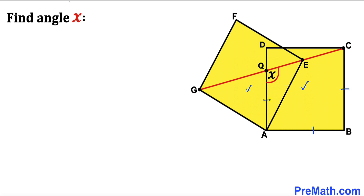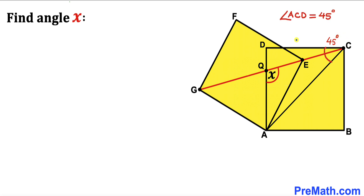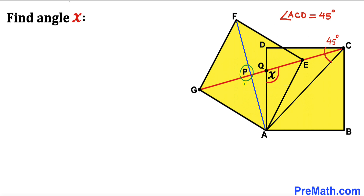Now let's focus on the given problem. Since both squares are identical, all their side lengths are congruent. Angle ACD is going to be 45 degrees. In the next step, I have connected vertices A and F. We can observe that GE and AF are the diagonals of this square, and they meet each other at point P, so this angle at P is going to be 90 degrees.